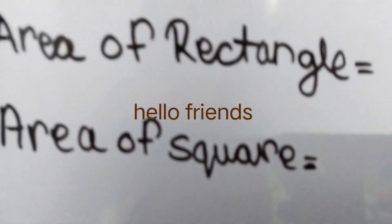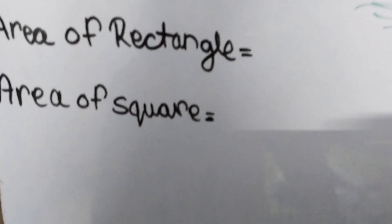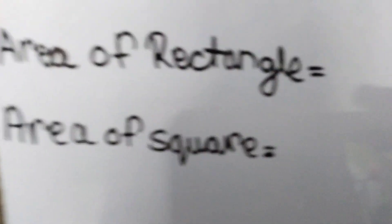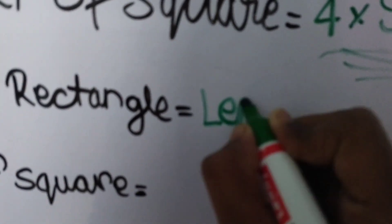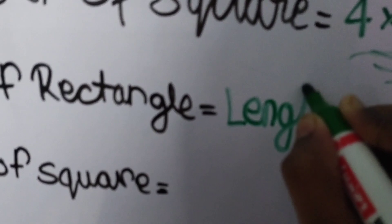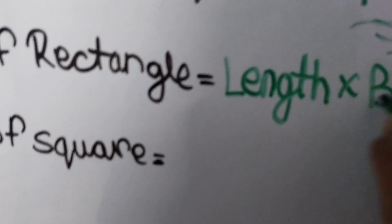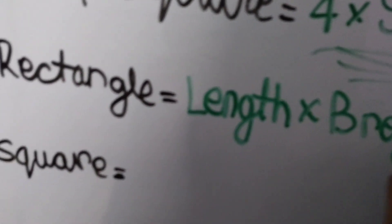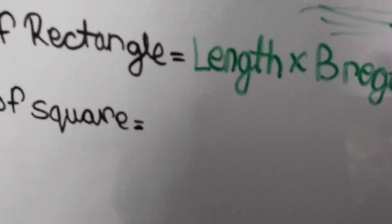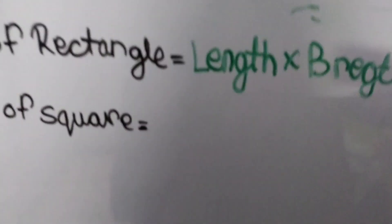Let's look at the area of rectangle, triangle, and square. First we will see the area of rectangle. The area of rectangle is equal to length into breadth.